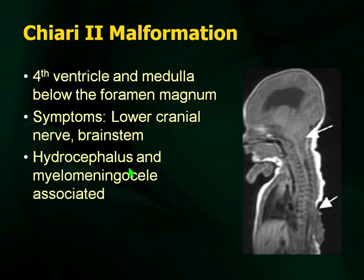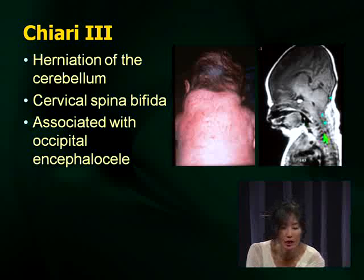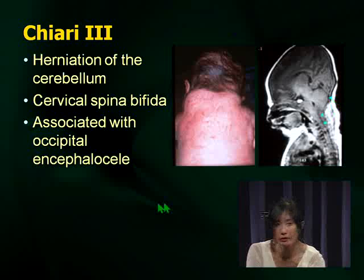The other important association is that myelomeningocele may be associated with Chiari 2. The more likely scenario is a picture of a myelomeningocele, and the question will be: what can this be associated with? Always think, if you see a myelomeningocele, look for hydrocephalus and look for a Chiari 2, because that's where you might need acute intervention. Chiari 3 is herniation even further, associated with cervical spina bifida and occipital encephalocele. The likelihood of seeing Chiari 3 questions is much lower than Chiari 1 or 2.